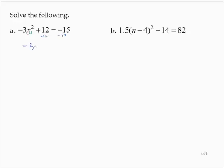So negative 3x squared is equal to negative 27. Dividing by negative 3, x squared is equal to 9. Now I will apply the square root property.